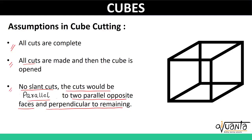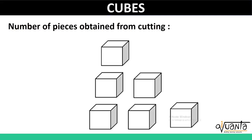Now let us look into cutting a cube and find out the number of pieces obtained by making those cuts. If we have a cube and we make only one cut, it is very obvious that a single cut will divide a cube into two pieces. So we can say that one cut leads to two pieces. We are just considering the number of pieces obtained by cutting a cube, not the number of cubes or cuboids formed.